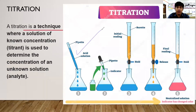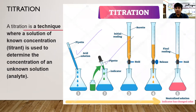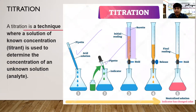The first step for titration: transfer the acid using a pipette to a flask. Then add two to three drops of the indicator — phenolphthalein, which is colorless in acid and pink in alkaline. Then transfer the sodium hydroxide into the burette.